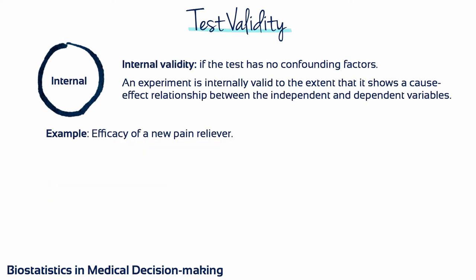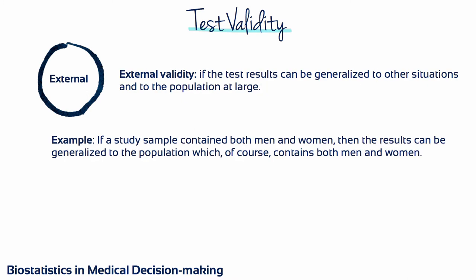Tests or studies also have particular levels of internal and external validity. A test has internal validity if all potential confounding factors are controlled for. For example, if you want to examine the efficacy of a new pain reliever, you want the group that gets the drug and the control group that gets the placebo to be matched on all other factors such as age, sex, and health status. A test has external validity if its results can be generalized. If your test included both men and women, then it can be generalized to the real population. If you had only tested women, your results could not be generalized to the real population — they would lack external validity.